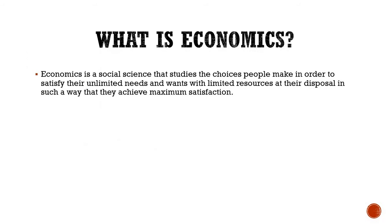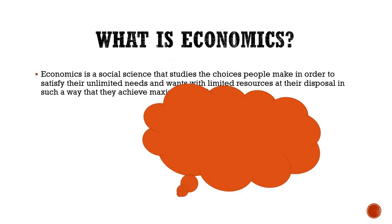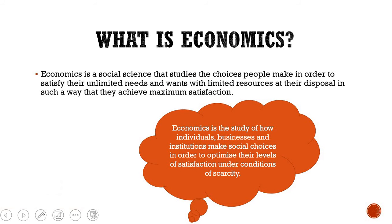Hello and welcome. In this video we will be looking at chapter 1, which discusses limits, alternatives and choices. We are going to start with the definition of economics. Economics is a social science that studies the choices that people make in order to satisfy their unlimited needs and wants with limited resources, in such a way that they achieve maximum satisfaction. It is a study of how individuals, businesses and institutions make social choices to optimize their levels of satisfaction under conditions of scarcity.